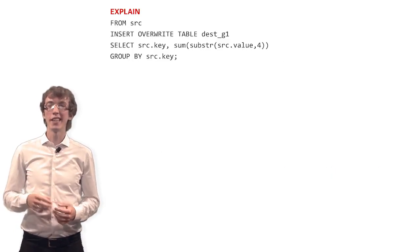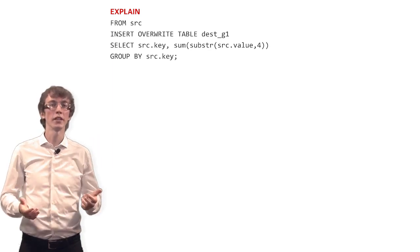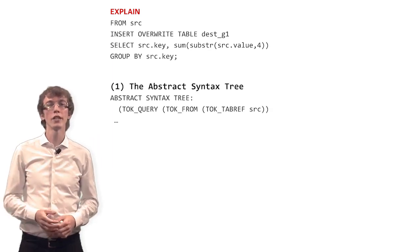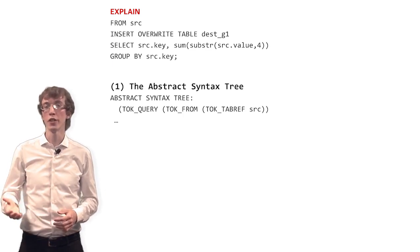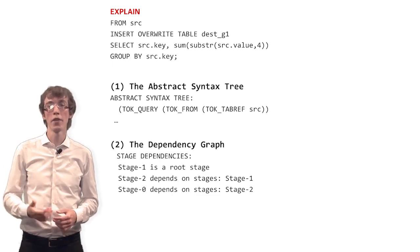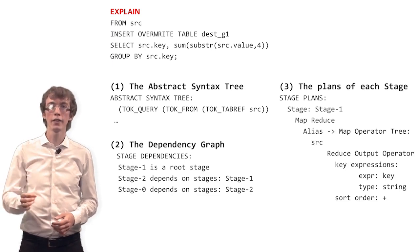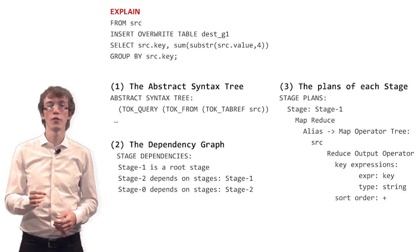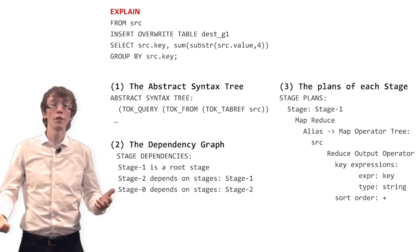Want to get a detailed execution plan for your query? Prefix it with the EXPLAIN statement. In the output, you will see how your query is parsed into an abstract syntax tree, how many stages you have and the connections between them, and most importantly, detailed information about each stage — so you will be able to figure out what will exactly happen during execution and where you will have map or reduce phases.